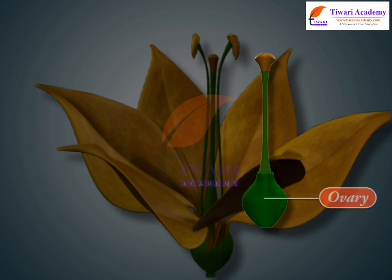The egg apparatus is present at the micropilar end and consists of two synergids and one egg cell. The synergids have cellular thickenings at the micropilar tip called the filiform apparatus, which guides the pollen tube into the synergid. Antipodal cells are three cells present at the chalaza end. Polar nuclei are present in the large central cell.